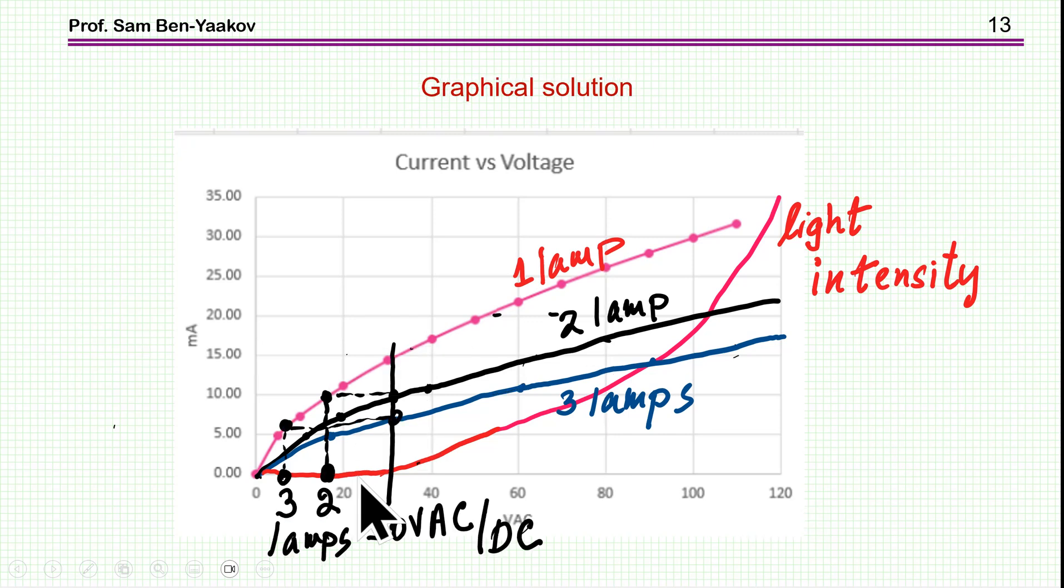And then I move to even a lower voltage. And here, for either two or three lamps, there's no light coming out. And then you can find out what is the current and what is the voltage of each of the lamps in the two states. So this is one way of solving it.